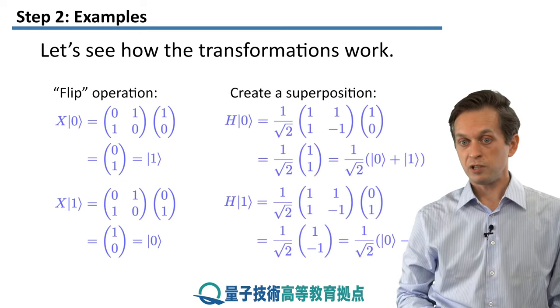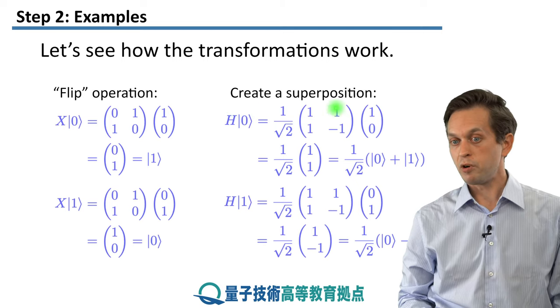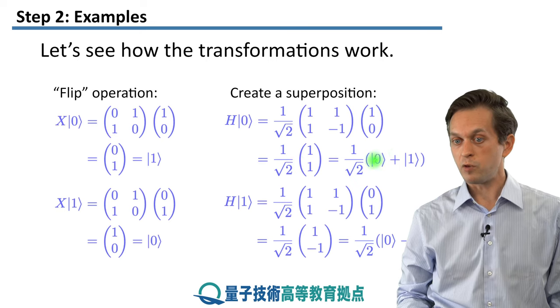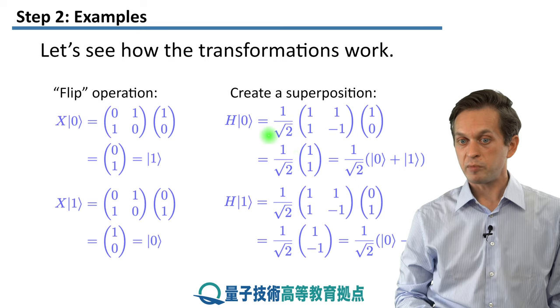To see how you can create a superposition, you just take the Hadamard operator, you apply it to 0, you go through the algebra, and in the end, what you get is an equal superposition of 0 and 1.